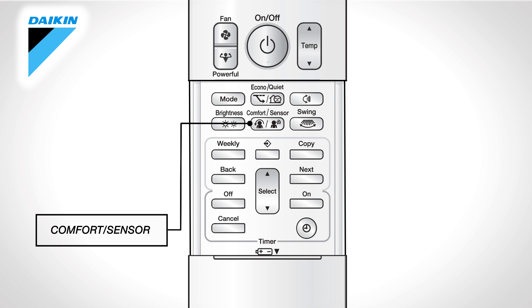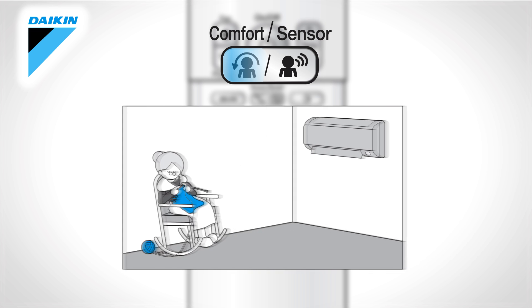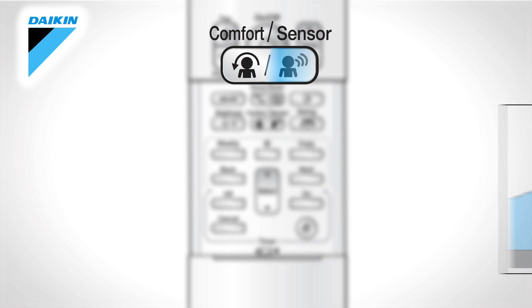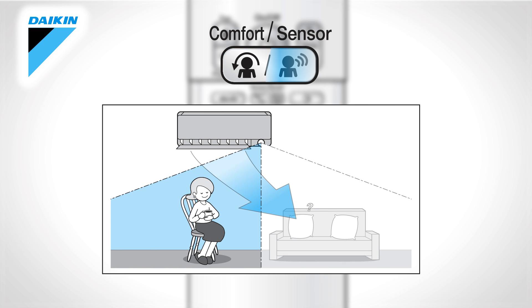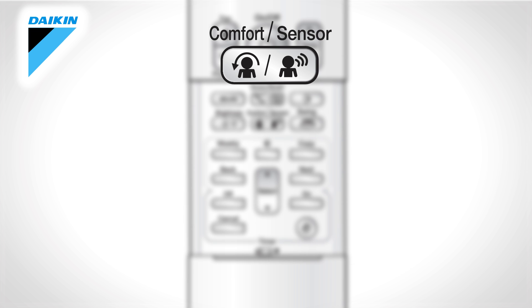Comfort Sensor: Press to select the desired mode. Comfort airflow: The airflow direction will be upward while cooling and downward while heating. Two-area Intelligent Eye: This is the infrared sensor which will detect human movement. If no one is in the room for more than 20 minutes, the operation automatically changes to energy-saving operation. Press once more on the button to cancel the operation. This comfort airflow and intelligent eye can also operate in combination.